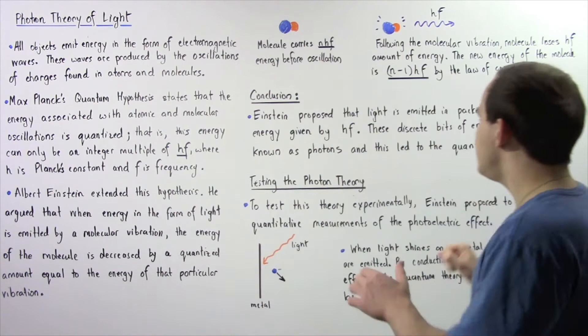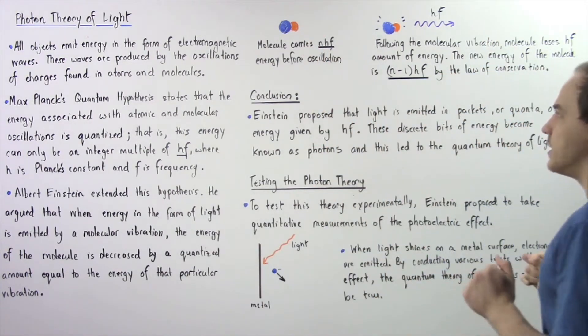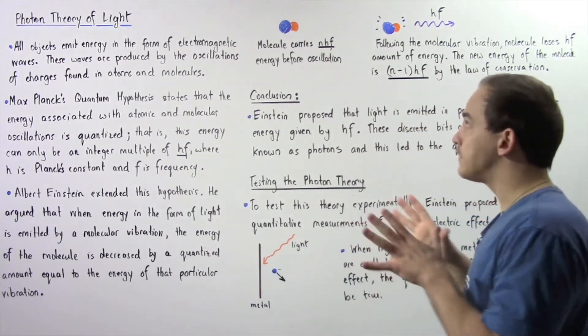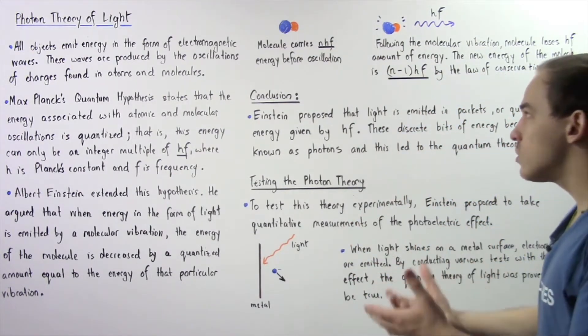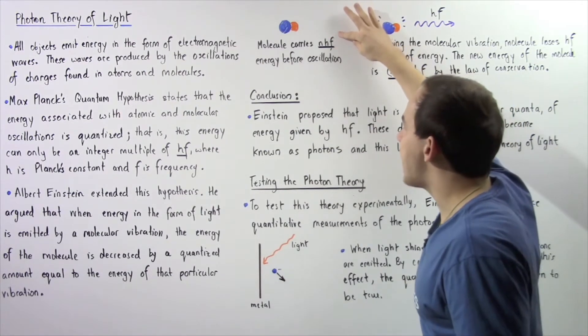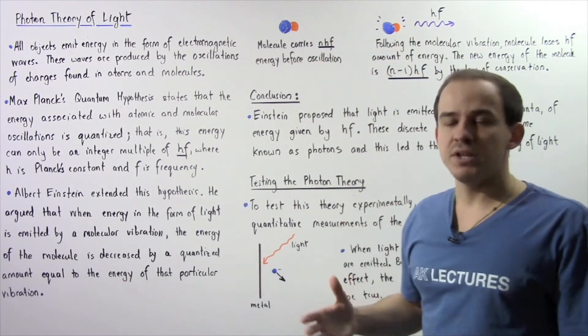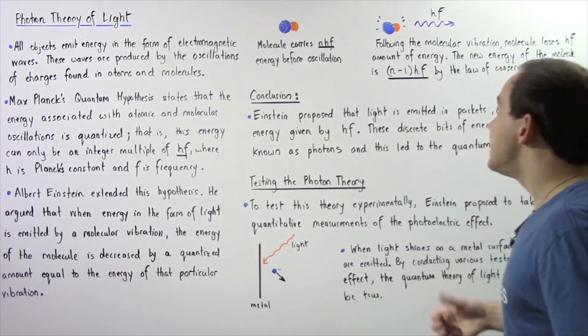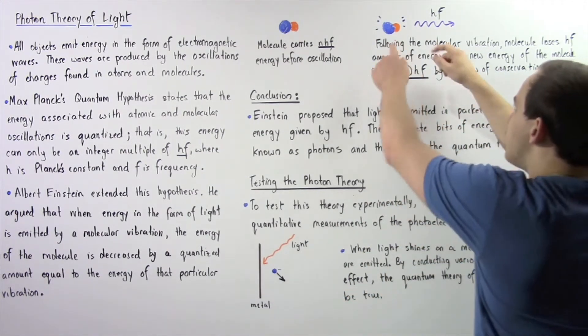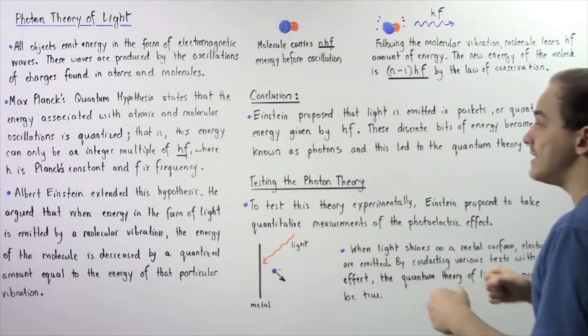So to see exactly what we mean, let's look at the following diagram. Let's suppose we have a certain molecule, and that molecule has a total energy equaling n times h times f, where n is simply some positive integer value. Now once our oscillation, once the vibration of the molecule actually takes place,